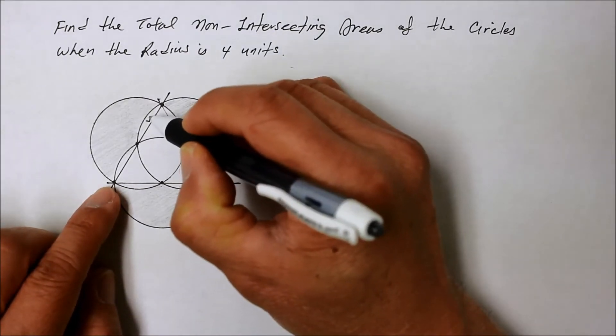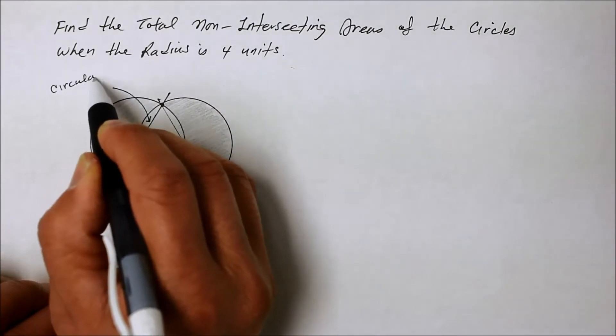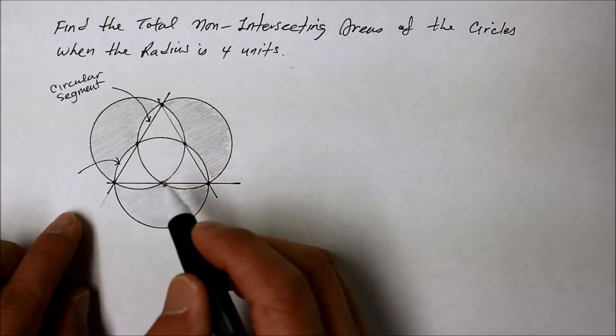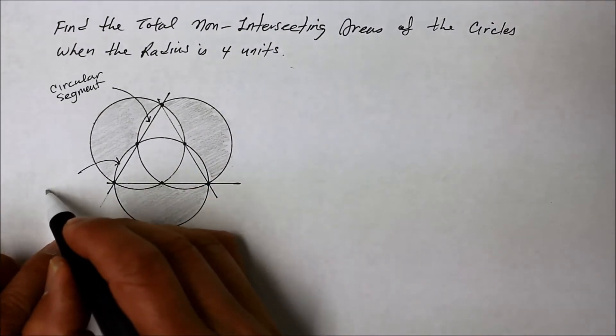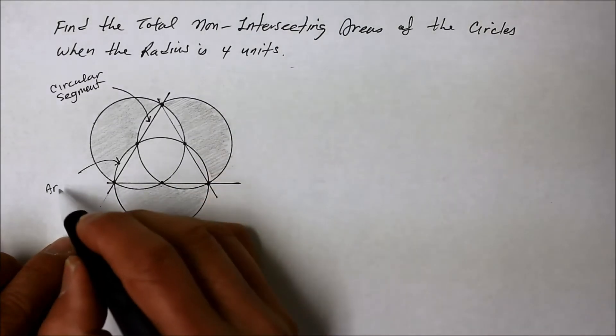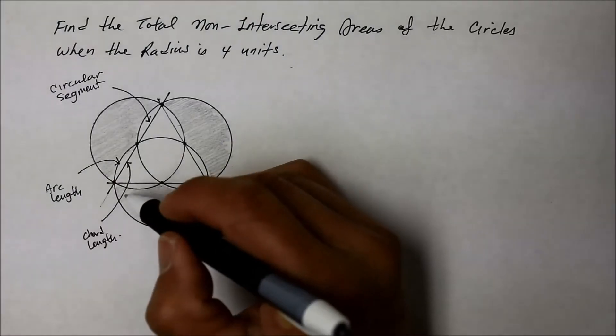That little part right there is a circular segment. Of course, these little things right there are called the arc length. We really don't need to know that because we're talking about areas right now. We're looking for the areas. So we don't need to know the arc length.